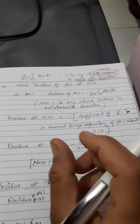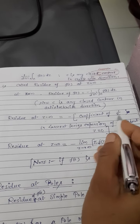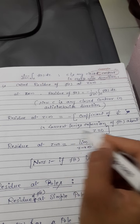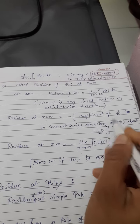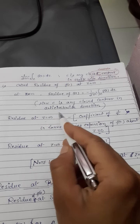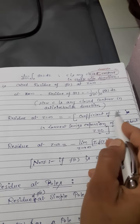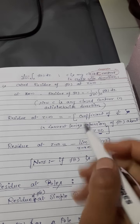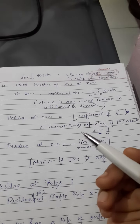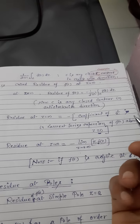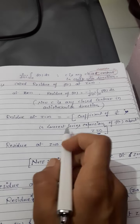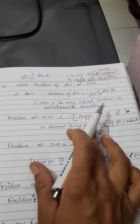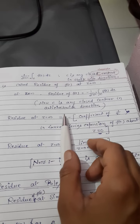Second method में बताया था कि z equal to infinite पर residue find out करने के लिए — जो भी Laurent series expansion है, z equal to 0 पर ले रहे हो, तो coefficient of 1 upon z का negative लोगे। यदि z equal to a पर Laurent series expansion है function का, then residue of f(z) at z equal to infinite = minus coefficient of 1 upon (z minus a). तो वो इस पर depend करेगा कि function को किस point के according series expansion form में represent कर रहे हो। Laurent series expansion का means यह है कि z की negative powers वाली terms उसमें include होंगी। Second method यह था — minus coefficient of 1 upon z.